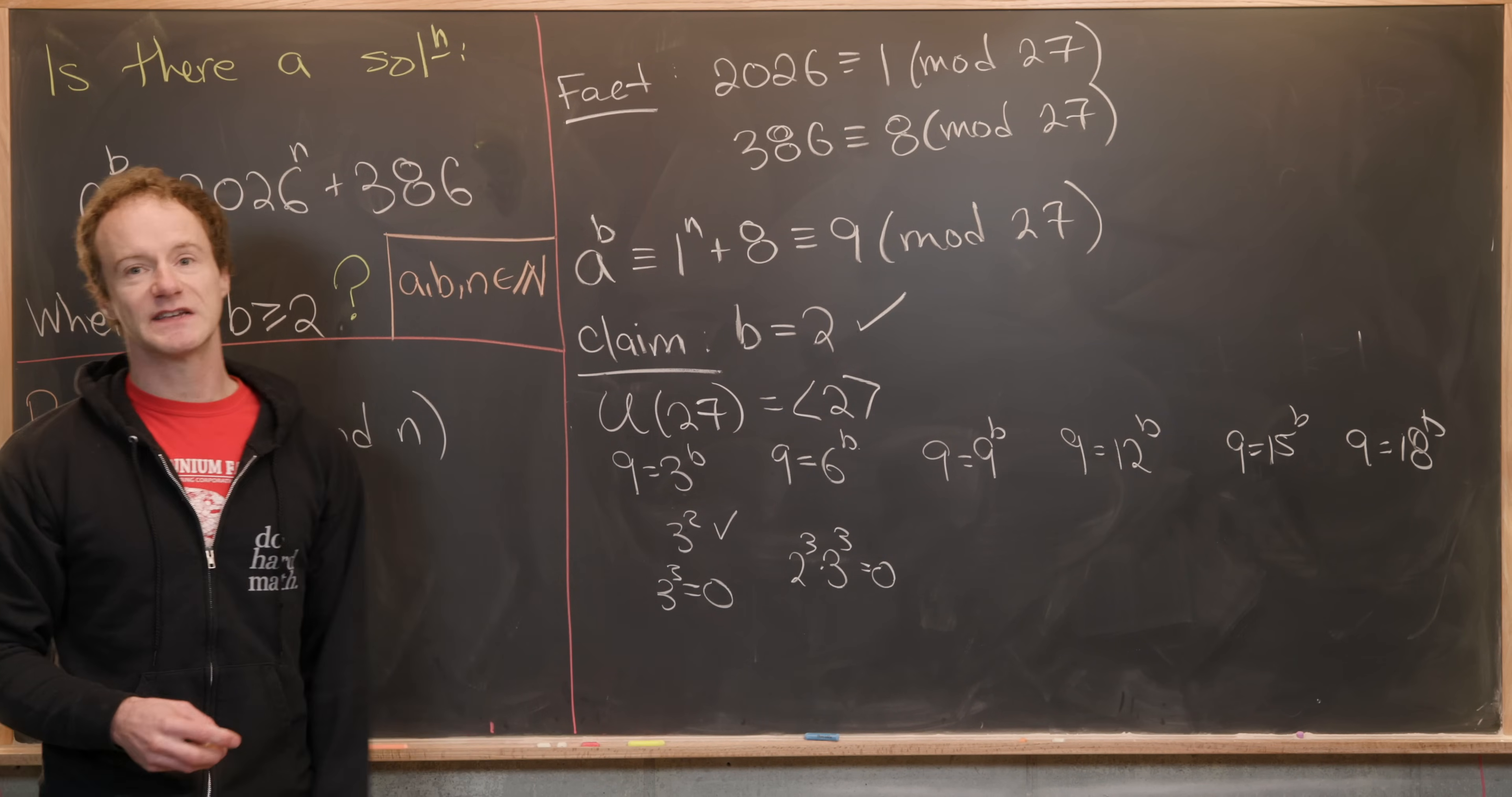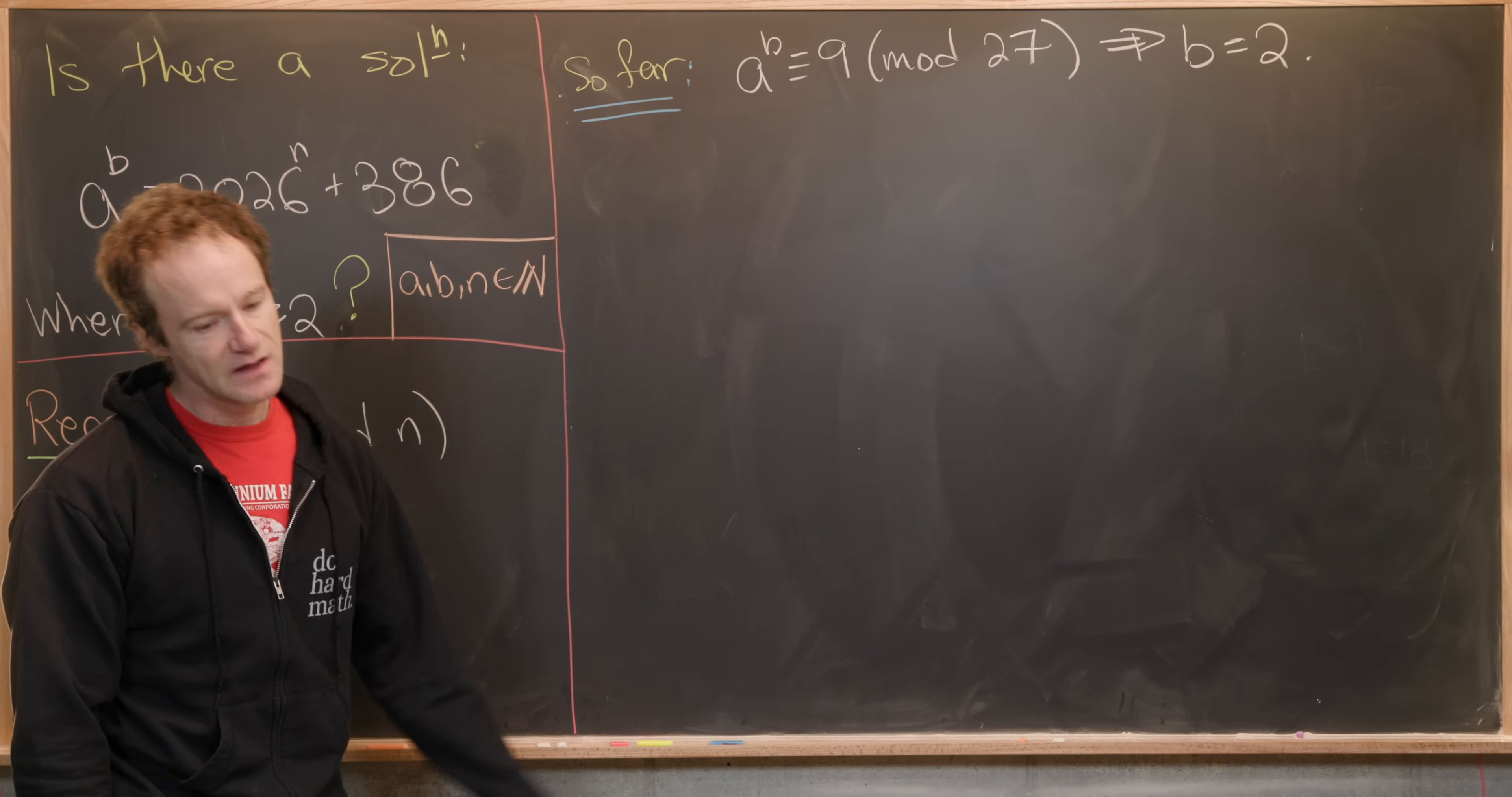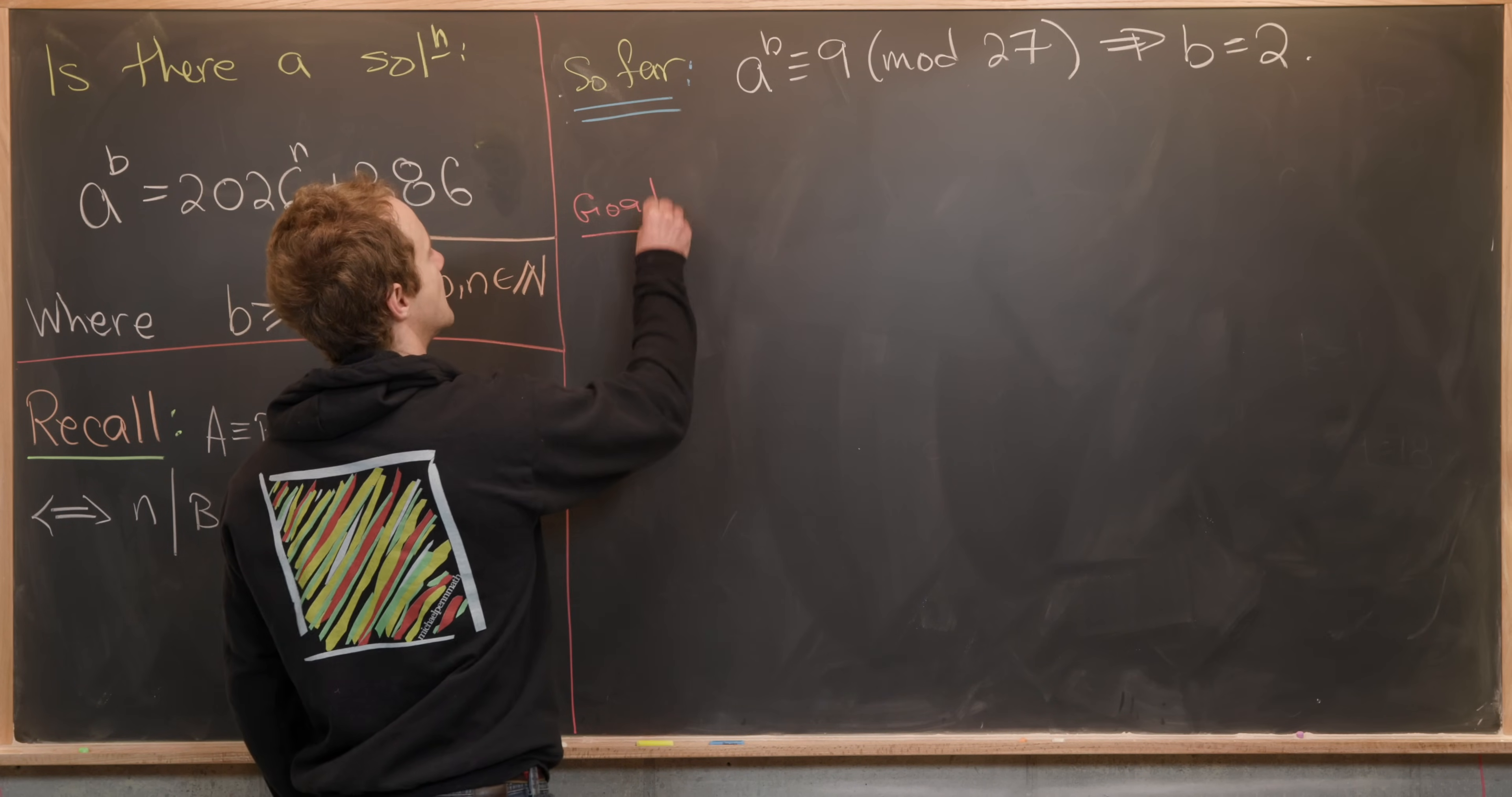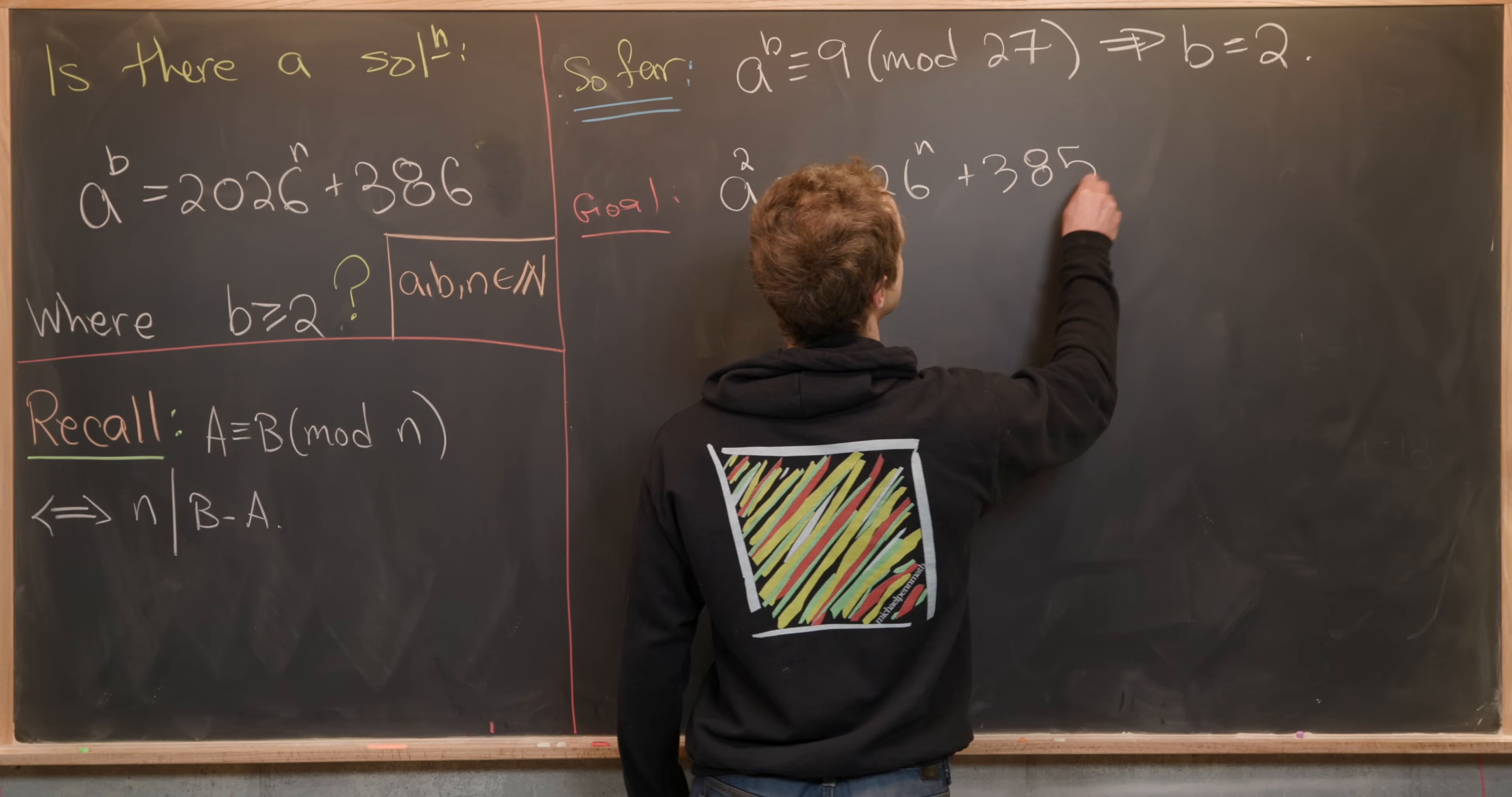Okay so let's get rid of this and we'll move on to the next part. So far we've determined that if we have a solution to our goal equation then a^b ≡ 9 (mod 27). Then on the last board we argued that that meant that b had to be equal to 2. So that kind of gives us a new goal. And that new goal is to see if we have a solution to a^2 = 2026^n + 386.